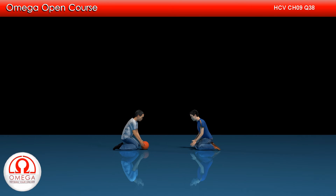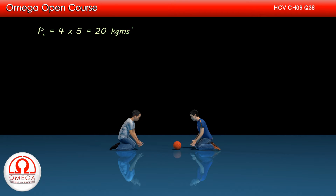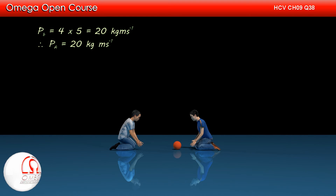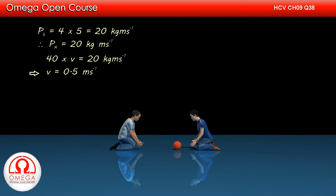When A rolls the ball for the first time with a speed of 5 meters per second, the momentum gained by the ball is 4 into 5, that is 20 kg meter per second. Since there is no external horizontal force on the system, the momentum of the system must be conserved. Therefore, the momentum gained by A must be equal in magnitude to the momentum gained by the ball. Thus the momentum of A after rolling the ball is 20 kg meter per second towards left. Let the speed of A be V. Since its mass is 40 kg, 40 into V must equal 20 kg meter per second, or V equals 0.5 meter per second.